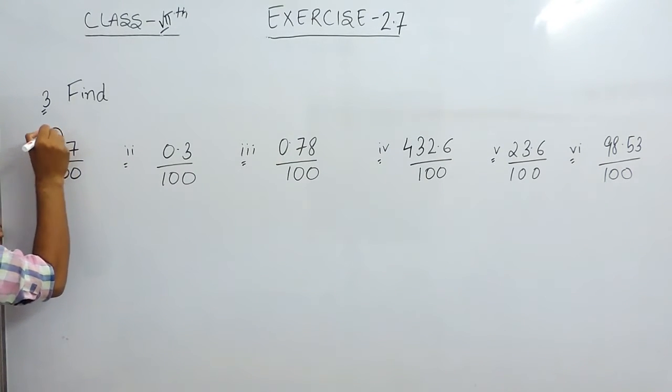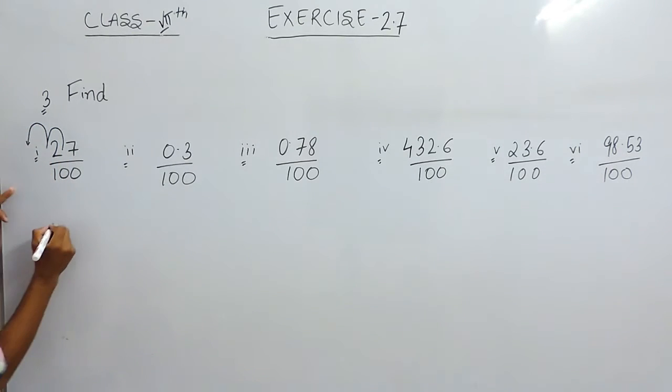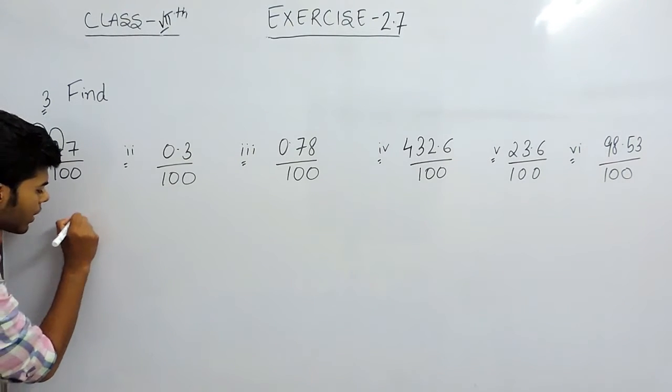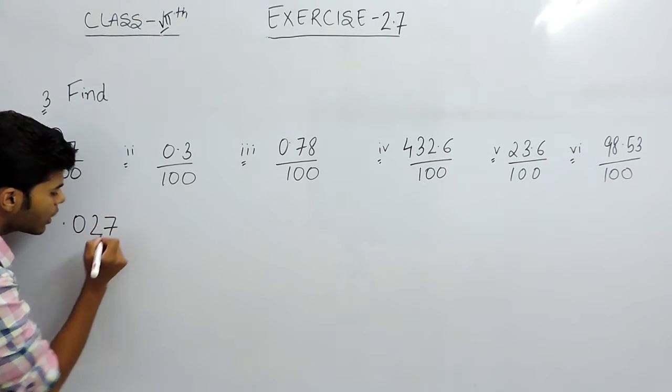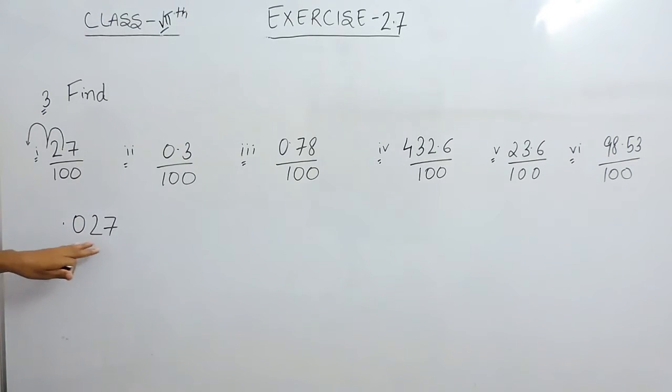This is point 1 and this is point 2. So the point will come here. This place is vacant, so there will be 0, and the answer will be 0.027.